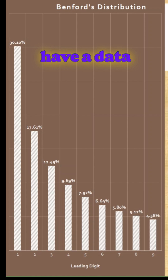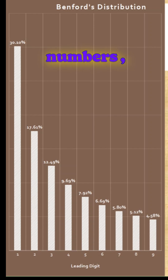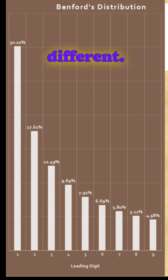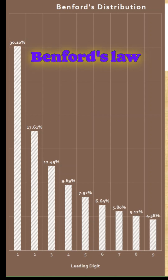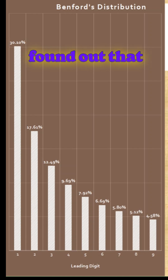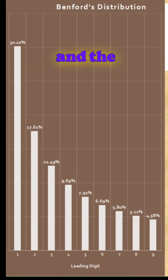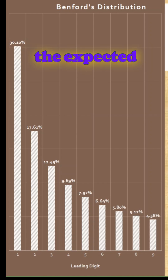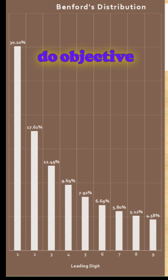Suppose we have a dataset, like a financial dataset. If somebody is trying to fudge those numbers — intentionally trying to fabricate — then the distribution will definitely look different. Auditors and statisticians who have worked on Benford's Law and applied the theory to several datasets found that whenever somebody is intentionally changing numbers, the distribution would not obey the expected Benford's distribution. As we said, this will be a helpful tool — you can do an objective investigation.